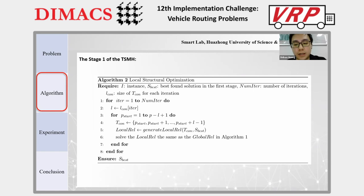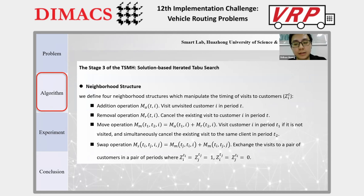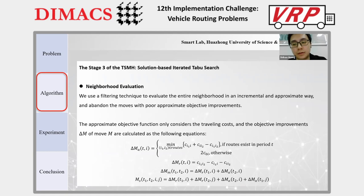Now we introduce the solution-based iterative type of search. We define four neighborhood structures which manipulate the timing of visits to customers. On this slide, Z-I-T, there are four operations: addition, removal, move, and span. We use a filtering technique to evaluate the entire neighborhood in an incremental and approximate way, and abandon moves with poor approximate objective improvements. The approximate objective function only considers the routing cost, and the objective improvements of each move are calculated accordingly.